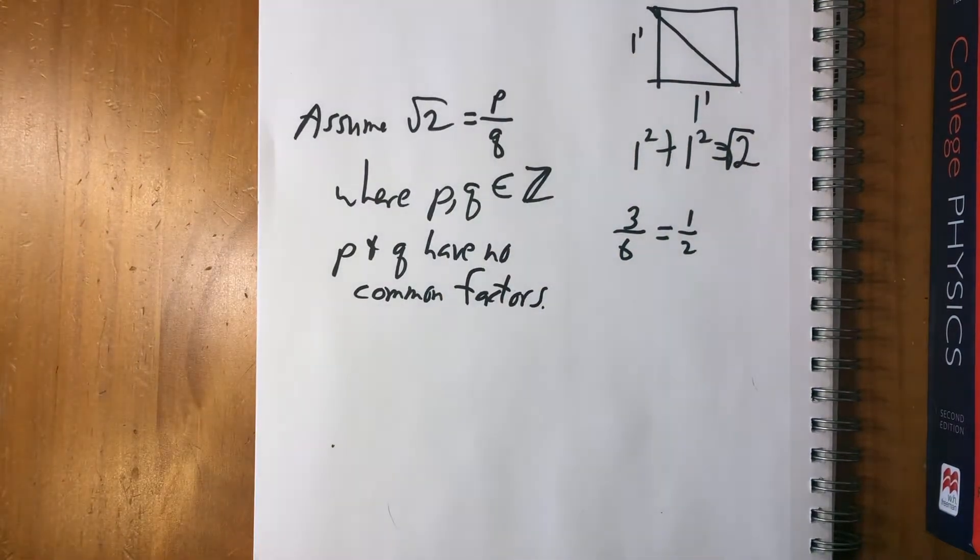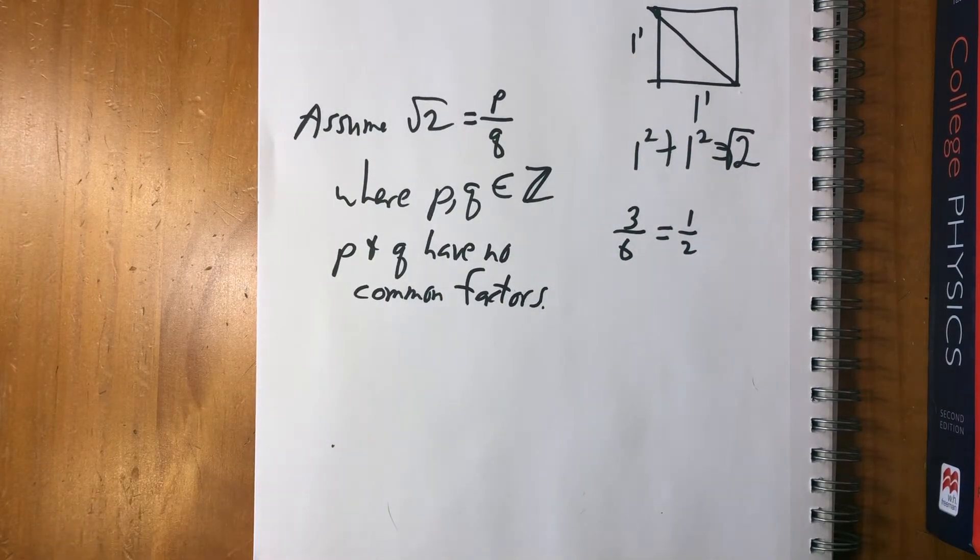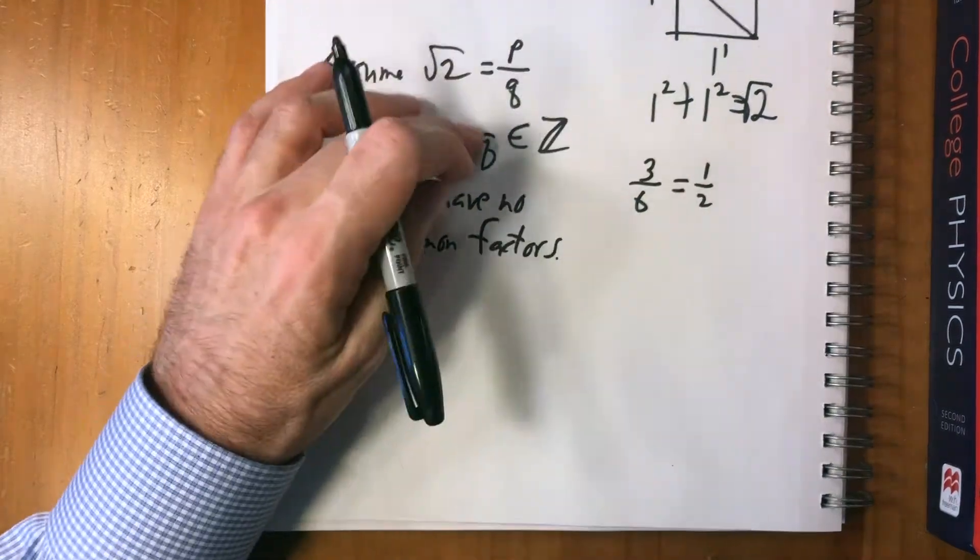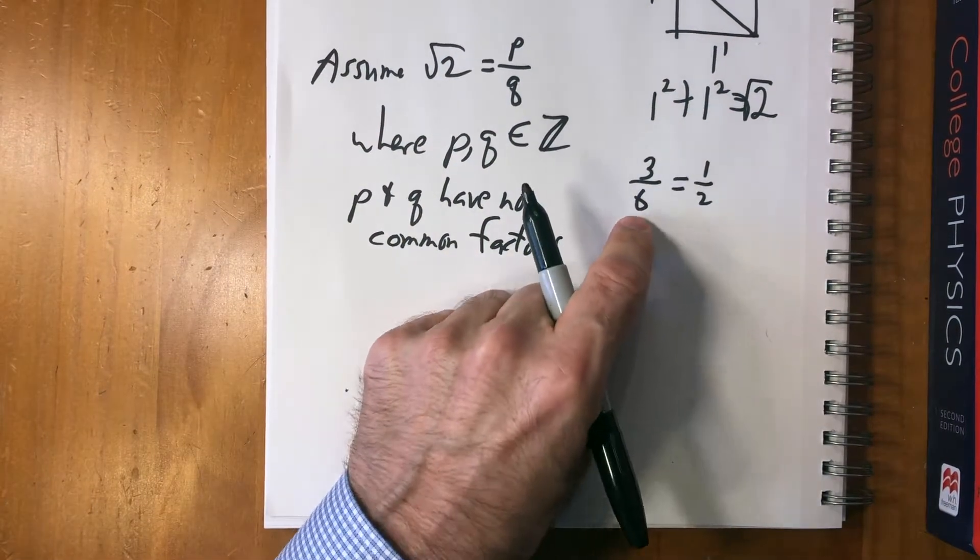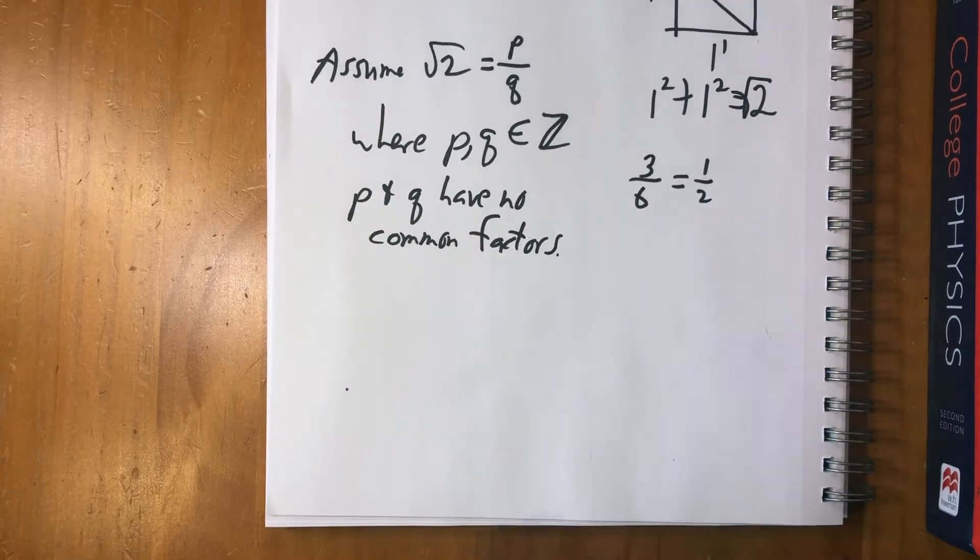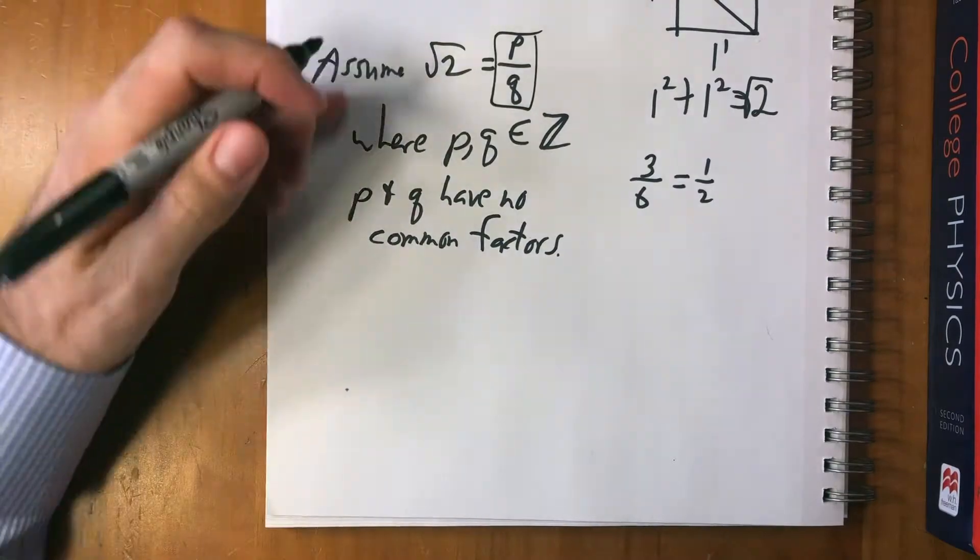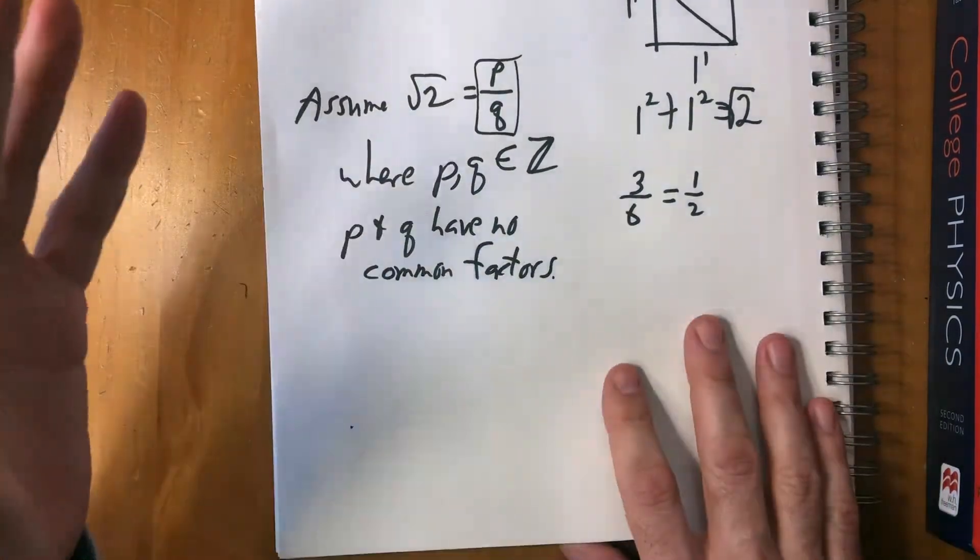All fractions can be expressed in a form where they have no common factors. That's just what we did in grade school: three over six or two over four can be reduced to one over two. So we're assuming that p over q is already reduced.